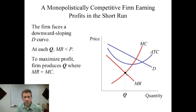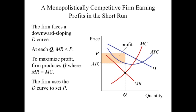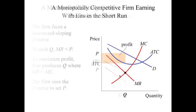We draw in the marginal cost and average total cost curves. Like every other firm, you set marginal revenue equal to marginal cost — that's the key condition. The firm finds the quantity where MR equals MC; there's only one such point. That gives you the quantity. Then you go up to the demand curve to find the maximum price you can charge. The price minus the average total cost per unit, multiplied by the number of units, gives you the profit in the short run.